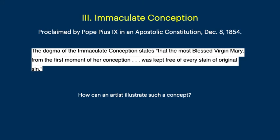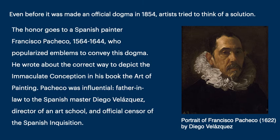Moving on to the third dogma: Immaculate Conception. The dogma of the Immaculate Conception states that the most blessed Virgin Mary, from the first moment of her conception, was kept free of every stain of original sin. Again, how can an artist illustrate such a concept? For this, we can thank a Spaniard. His name is Francisco Pacheco, and he popularized emblems or symbols to convey this dogma, writing about it in a book called Art of Painting.